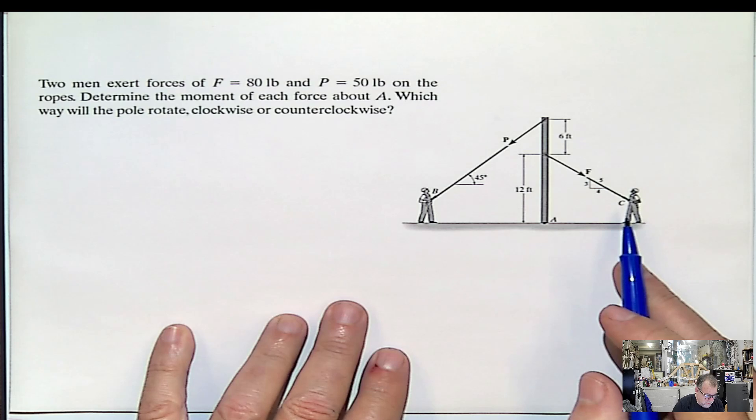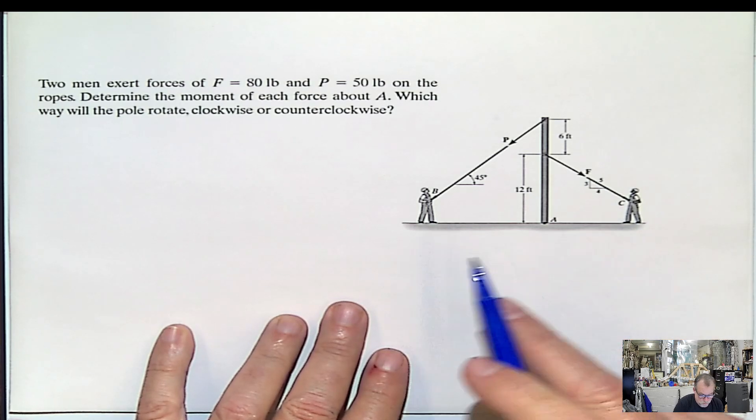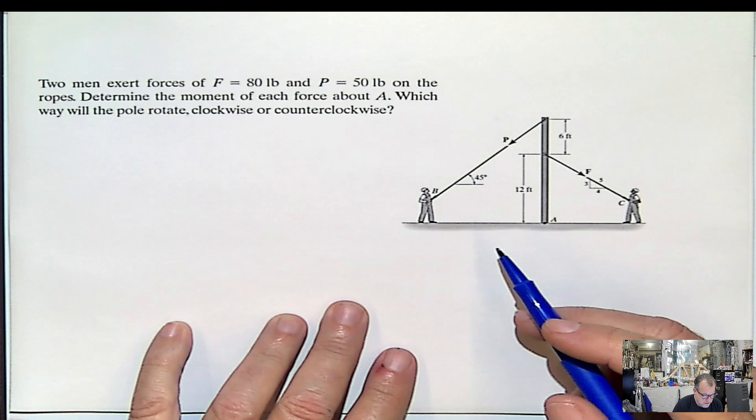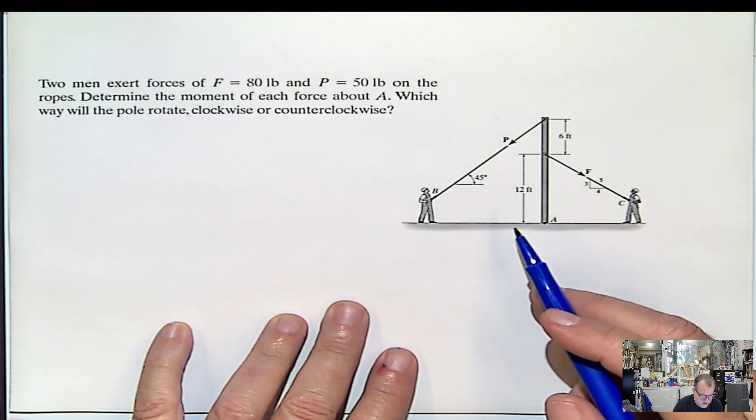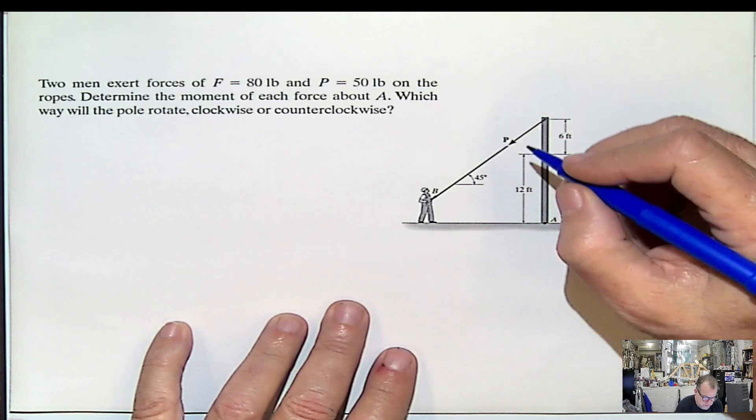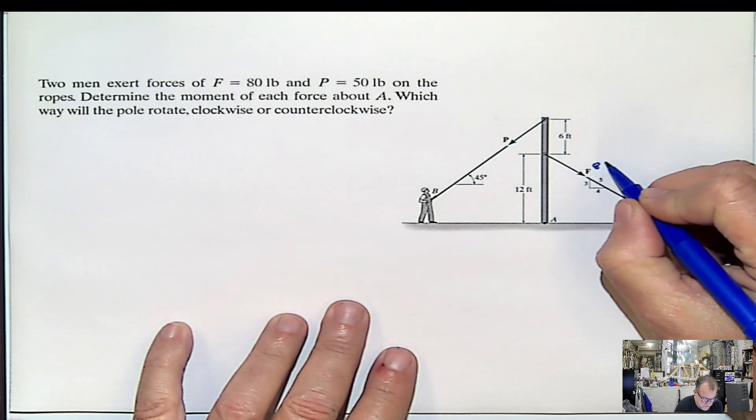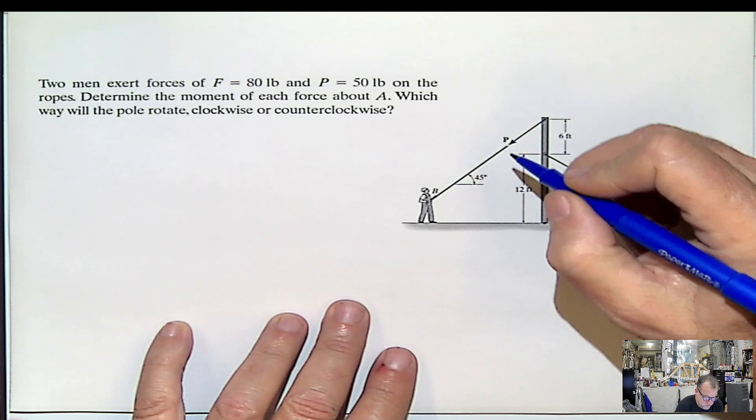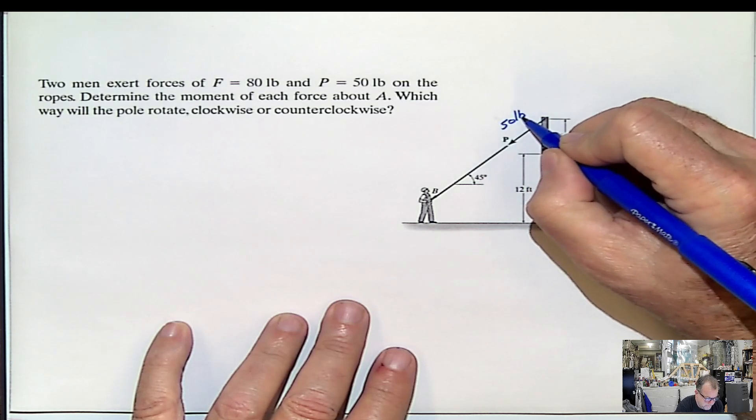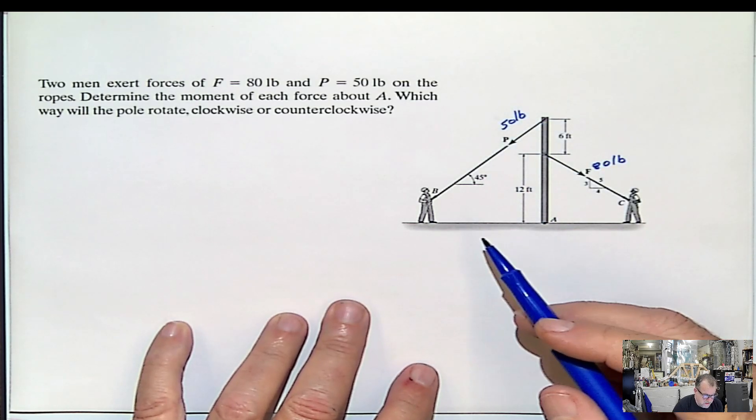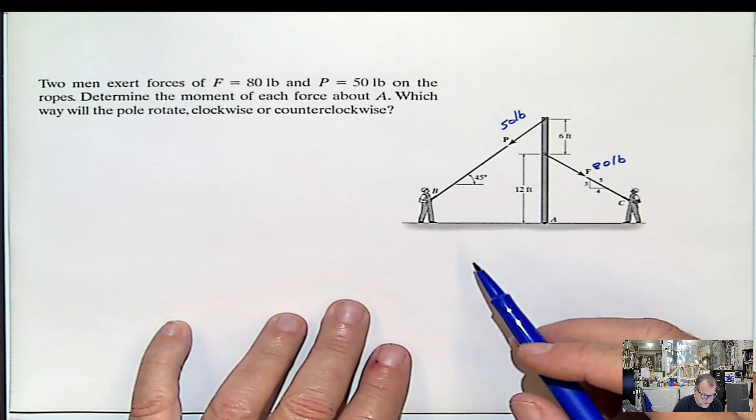It says two men exert, two people, two persons, exert the force of 80 pounds, and this is 80 pounds, and a force of 50 pounds here, and the ropes. Determine the moment of each force about A.